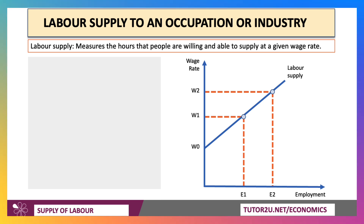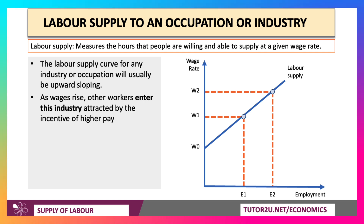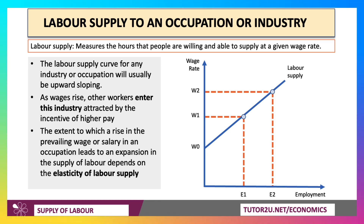Normally the labour supply curve slopes upwards. As wages go up, there's a greater incentive to work. As wages rise in an occupation, other workers enter the industry, perhaps attracted by the incentive of higher pay and other rewards, including overtime and bonuses. The extent to which a rise in the wage leads to an expansion of labour supply depends on the elasticity of labour supply.